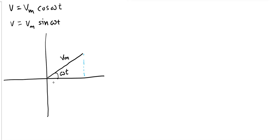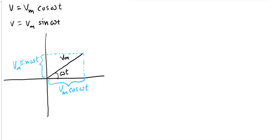If I look at the x-component of this vector Vm, I will get Vm cos(ωt), and if I take the y-component of this vector I will get Vm sin(ωt).